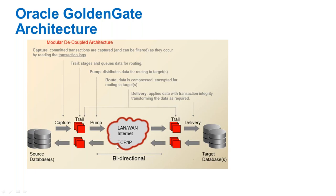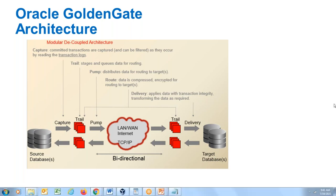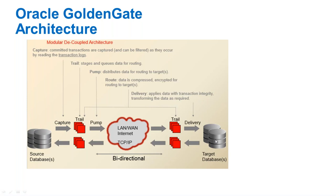GoldenGate works in a bi-directional environment, meaning both sites can be live simultaneously. Transactions on site A are replicated to site B, and transactions on site B are replicated to site A. I call bi-directional as two-way unidirectional with some considerations.